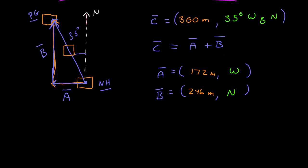I've written those vectors here. I would measure the first vector to have a magnitude of 172 meters and that's directly west. And then the other vector had a magnitude of 246 meters directly north.